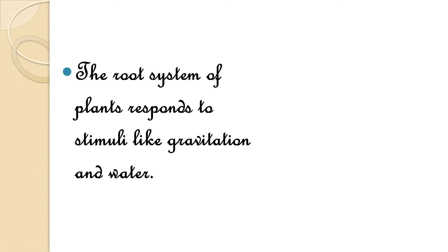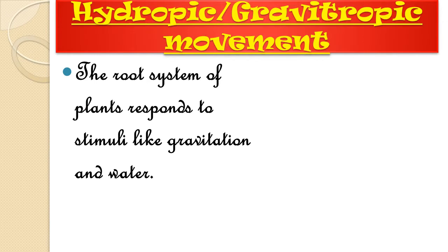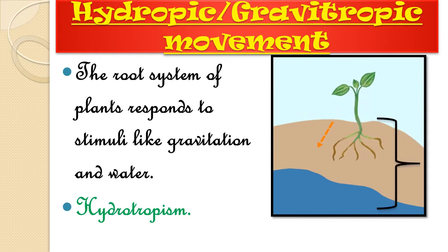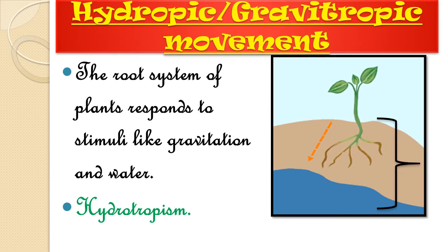The root system of a plant responds to stimuli like gravitation and water. The response to water is called hydrotropism, and the response to gravitational force is called gravitropism. Gravitational force means the Earth's force that attracts every object towards itself. In the picture alongside, you can observe the root of the plant growing under the influence of gravitation and water.